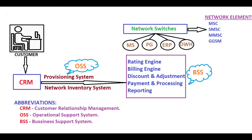CRM is also used to store customer complaints and feedback. After CRM, the order goes to OMS - Order Management System, also called Order Management or Order Fulfillment - where customer requirements will be activated. After OMS, the order goes to OSS, which is the Operational Support System.